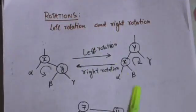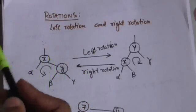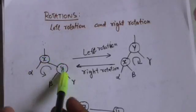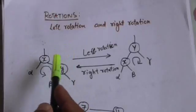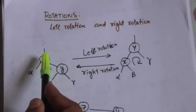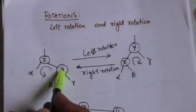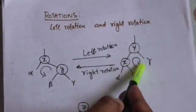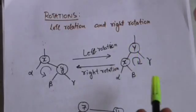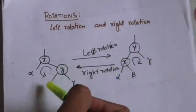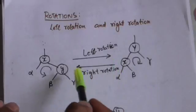Suppose there is a binary search tree with a sub-tree rooted at node x. When we do a left rotation on node x, its right child y will become the new root of the sub-tree. Node x will become the left child of node y, and the left child of node y will become the right child of node x.